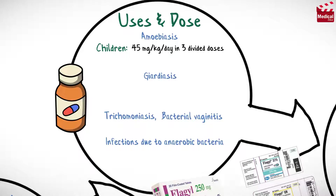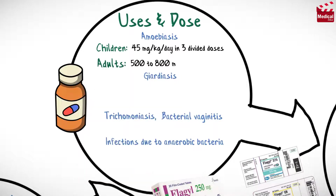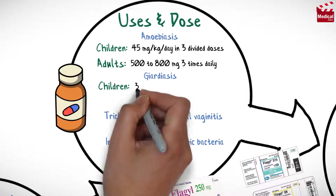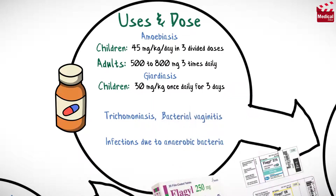For amoebiasis, the children's dose is 45 mg/kg/day in three divided doses, and for adults 500 to 800 milligrams three times daily. For giardiasis, the children's dose is 30 milligrams per kilogram once daily for three days, and for adults 2 grams once daily for three days.